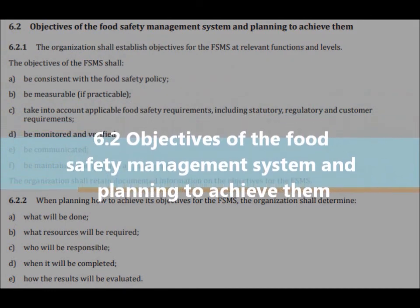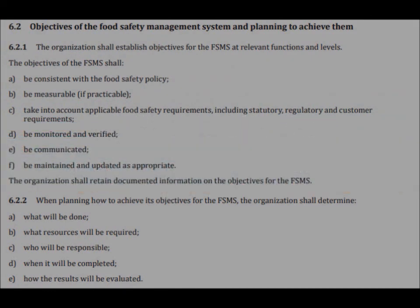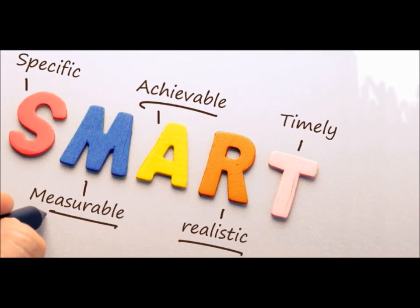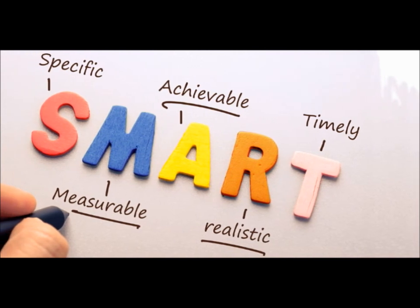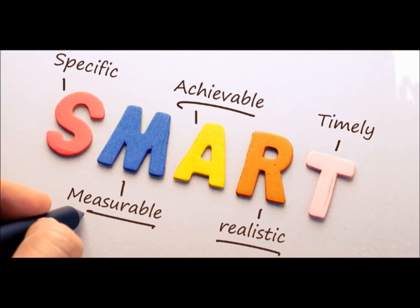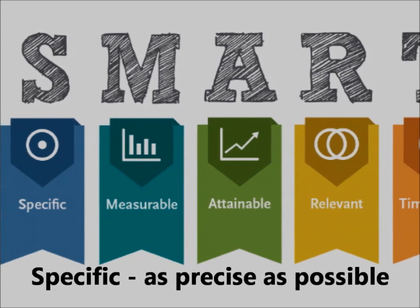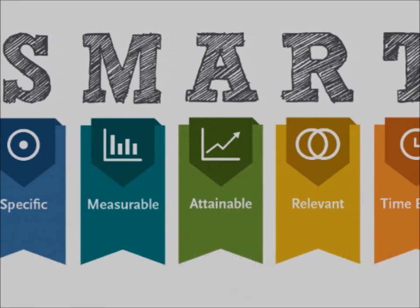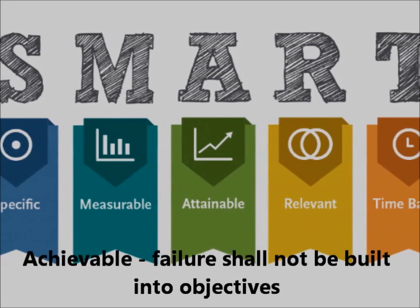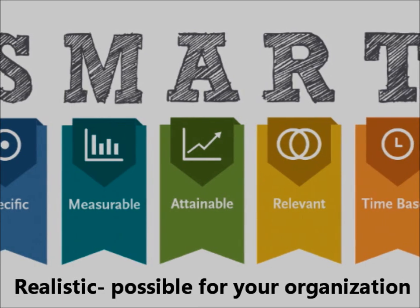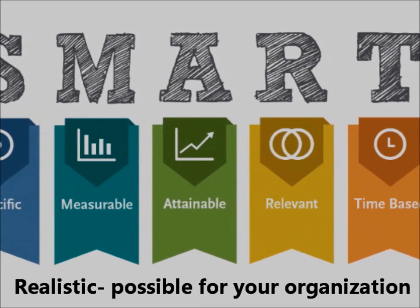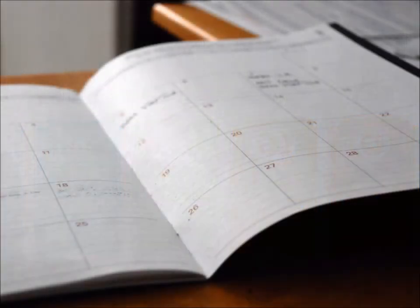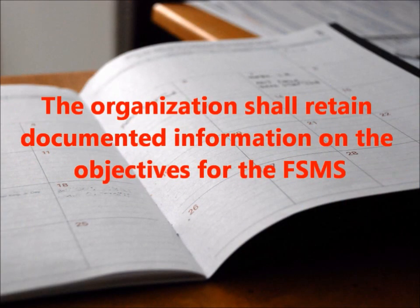6.2 — Objectives of the food safety management system and planning to achieve them. The SMART framework will guide you on the establishment of adequate objectives for your organization. You should think of the following requirements: they should be Specific — as precise as possible; Measurable — quantifiable so we can monitor progress; Achievable — failure shall not be built into objectives; Realistic — possible for your organization; Timely — with a completion date established.